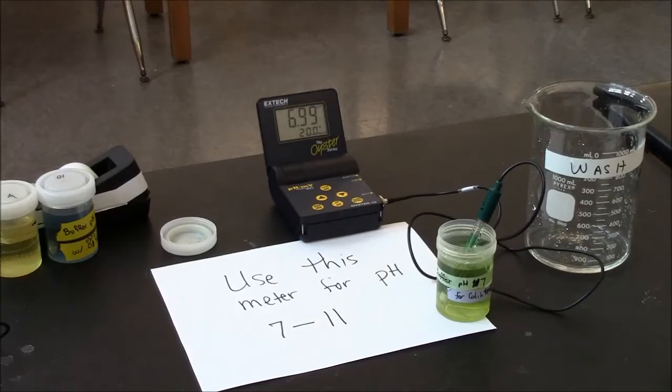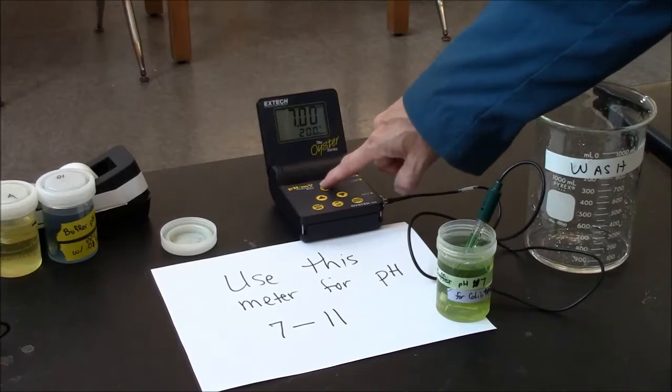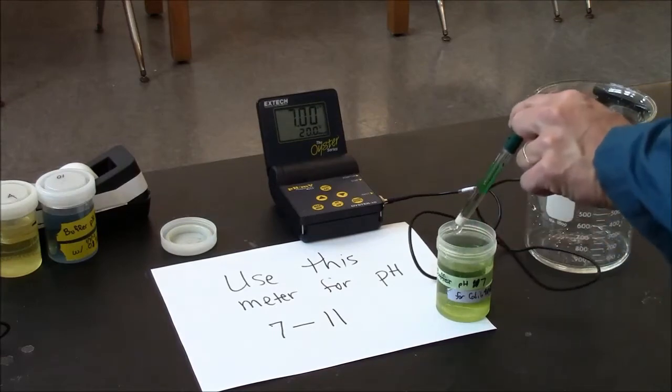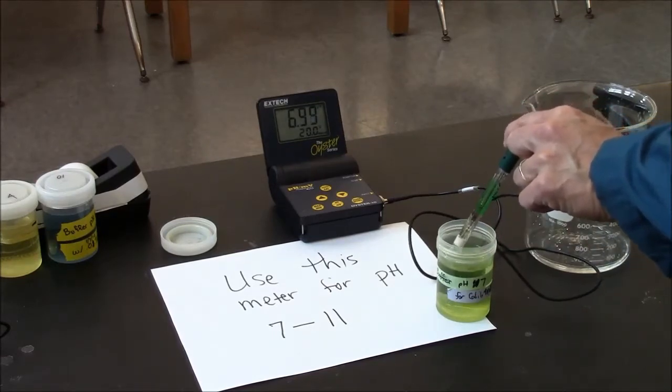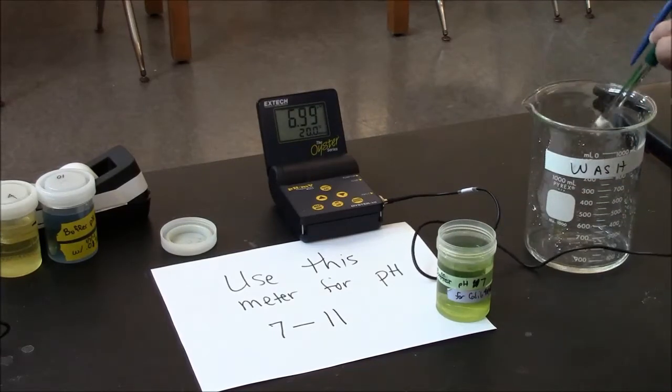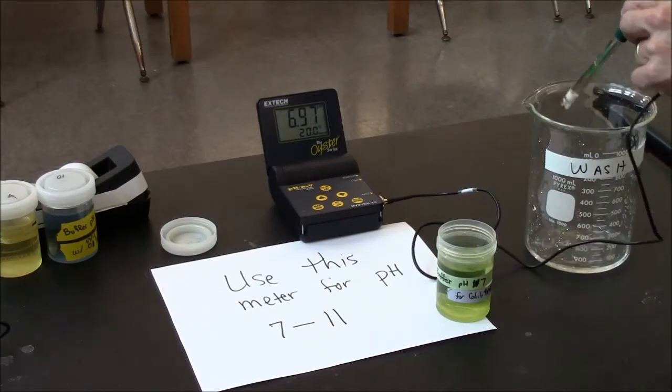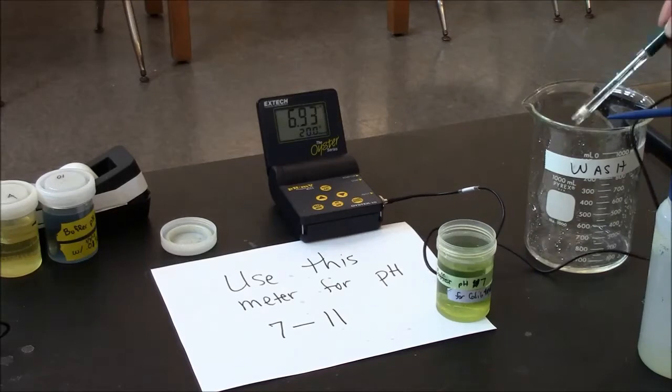A reminder on how to use the pH meter. If it's not showing anything, briefly press the power button. Take out the electrode from its resting buffer and rinse into the wash beaker with the distilled water provided. Measure your sample.